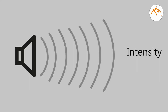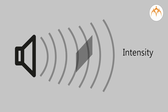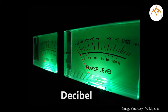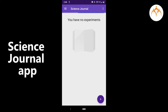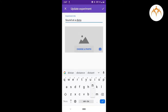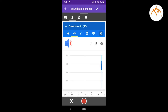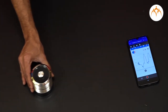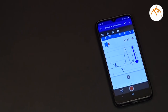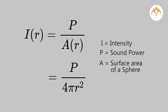As we move away from the source of sound, the area increases and intensity of sound decreases. Decibel is the unit of measuring sound intensity. We will use the Science Journal app to measure the intensity of sound produced by this speaker. As we move our mobile away from the speaker, the intensity of sound reduces. The intensity of sound level is calculated with the help of a formula, which we will not talk about for now.